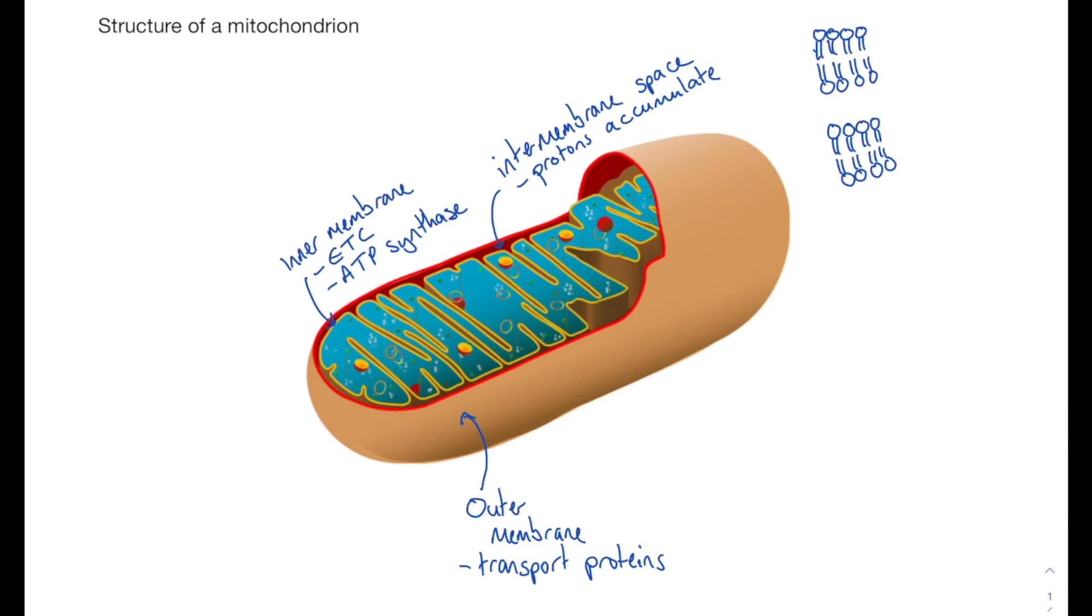These protrusions of the inner membrane that you can see here are known as cristae, and they increase the surface area to volume ratio of that inner membrane so you can fit more electron transport chain proteins and more ATP synthase proteins.